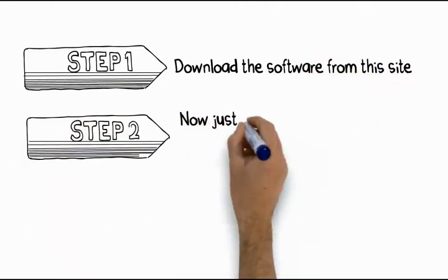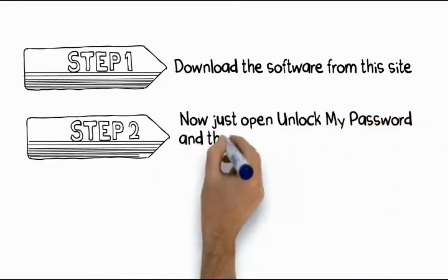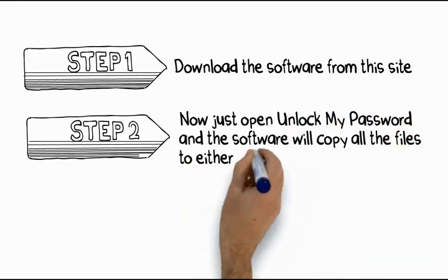Step 2: Now just open Unlock My Password and the software will copy all the files to either a CD or a USB device.